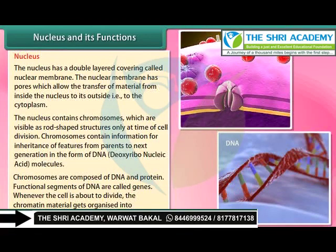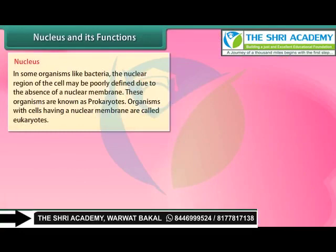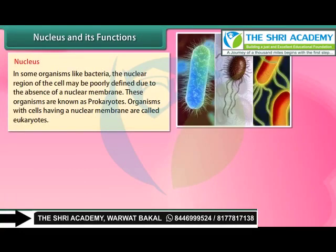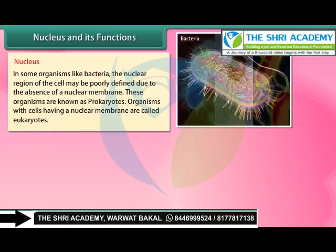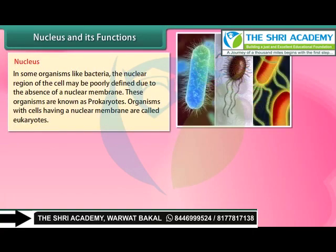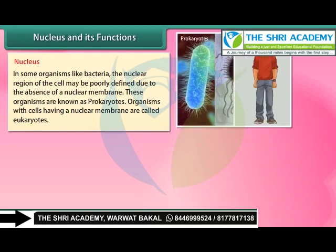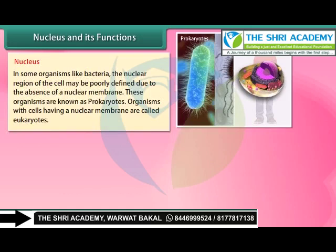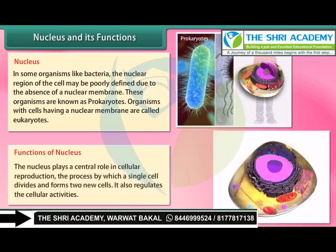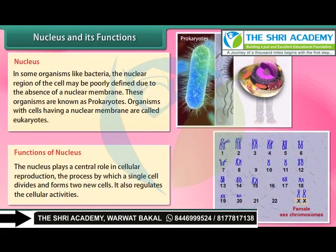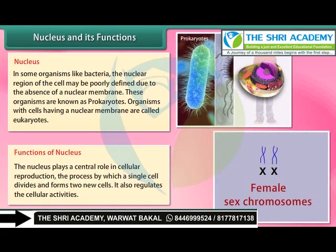Whenever the cell is about to divide, the chromatin material gets organized into chromosomes. In some organisms like bacteria, the nuclear region may be poorly defined due to the absence of a nuclear membrane; these organisms are known as prokaryotes. Organisms with cells having a nuclear membrane are called eukaryotes. The nucleus plays a central role in cellular reproduction — the process by which a single cell divides and forms two new cells — and it also regulates cellular activities.